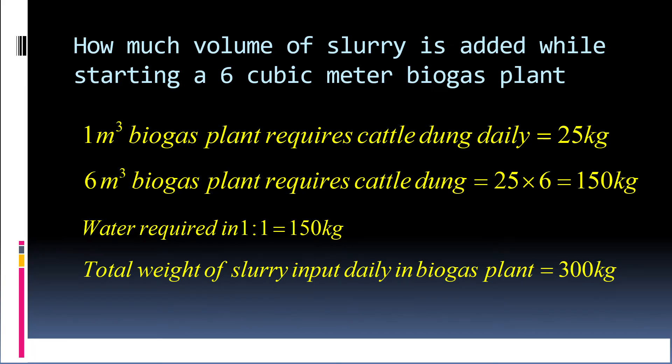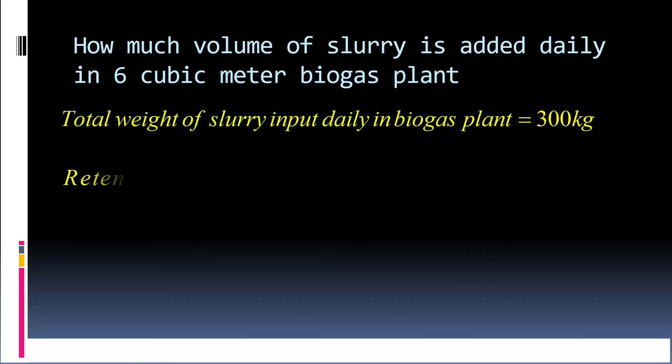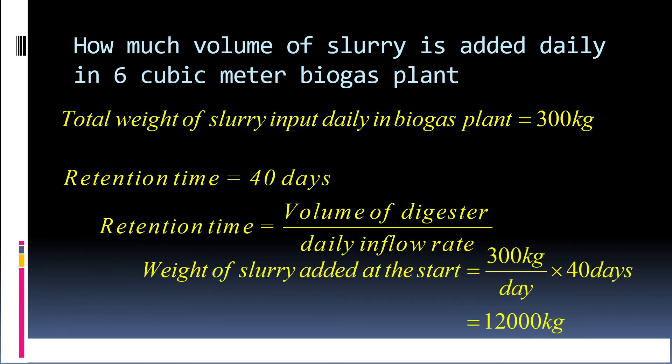Now, how much slurry is added at the start in a 6 cubic meter biogas plant? Total weight of slurry we have just calculated is 300 kg. Retention time, let us assume it is 40 days. Retention time can be calculated by the formula: volume of digester divided by daily inflow rate. You should see the video of retention time to understand the formula. So weight of slurry added at the start is 300 kg per day times 40 days, that will be 12,000 kg.